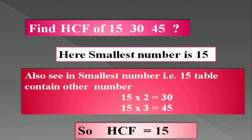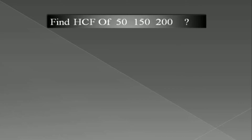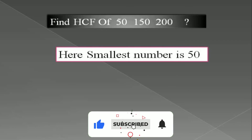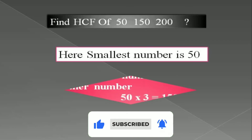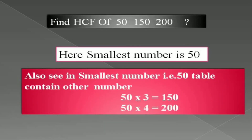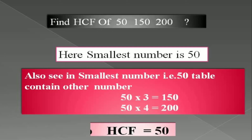Again, we take a second example: find the Highest Common Factor of 50, 150, and 200. The smallest number is 50. We check whether the 50 times table contains the other numbers — 50 × 3 = 150 and 50 × 4 = 200. So we get the answer: the Highest Common Factor is equal to 50.